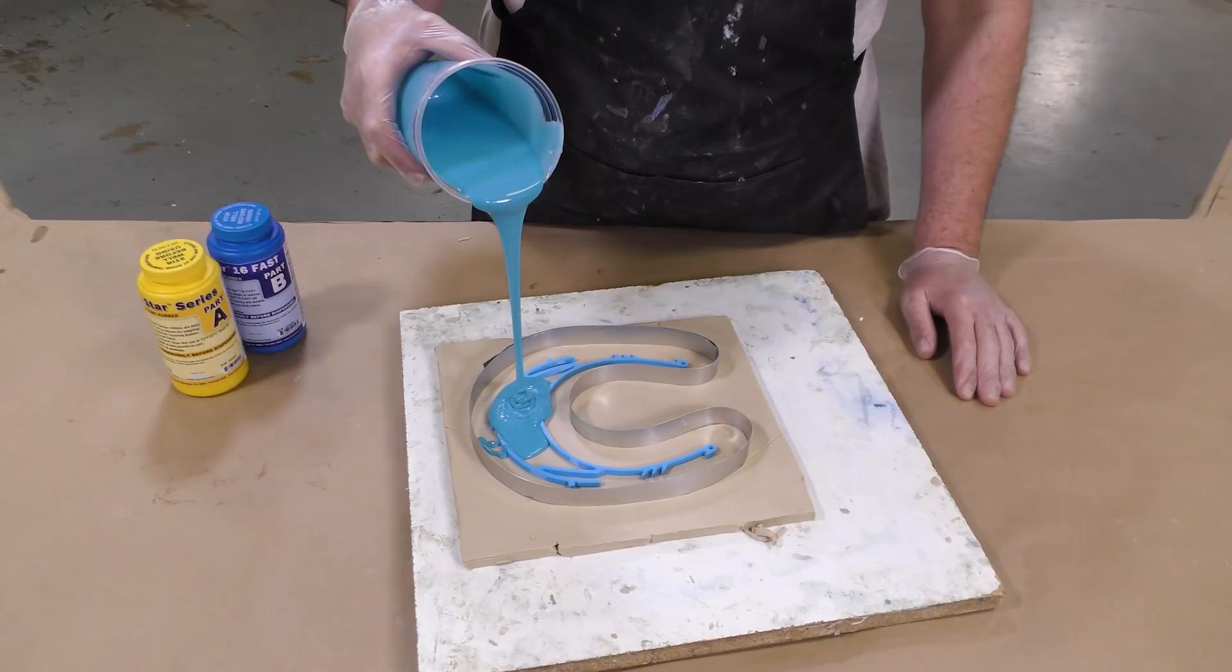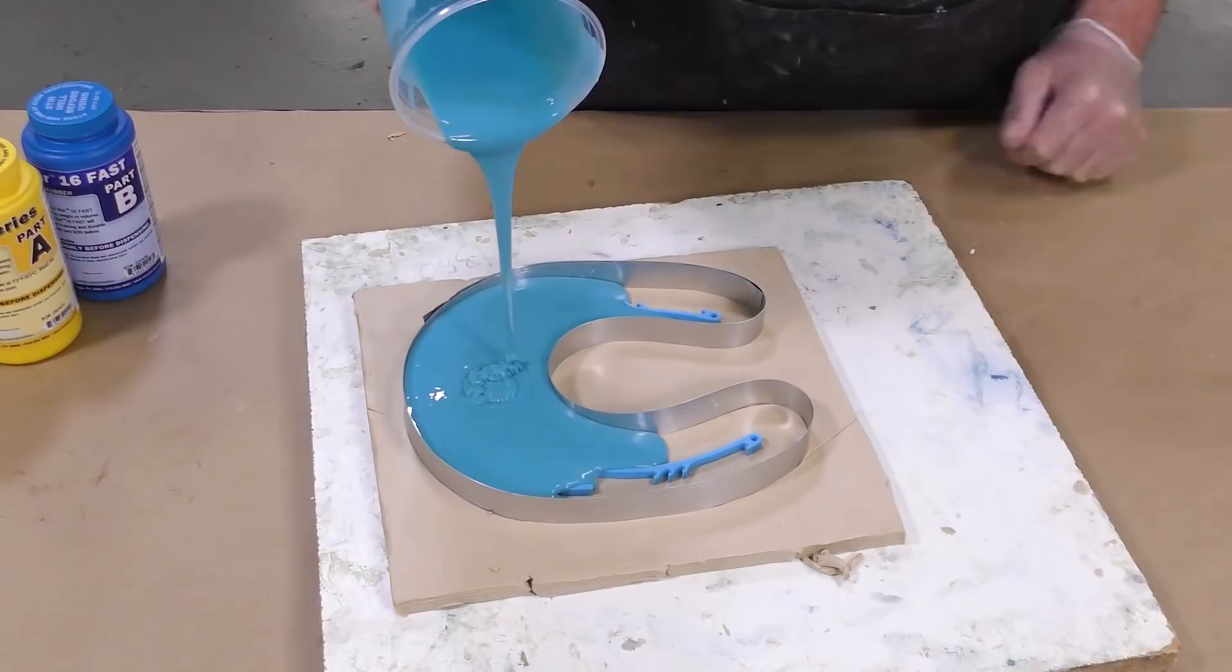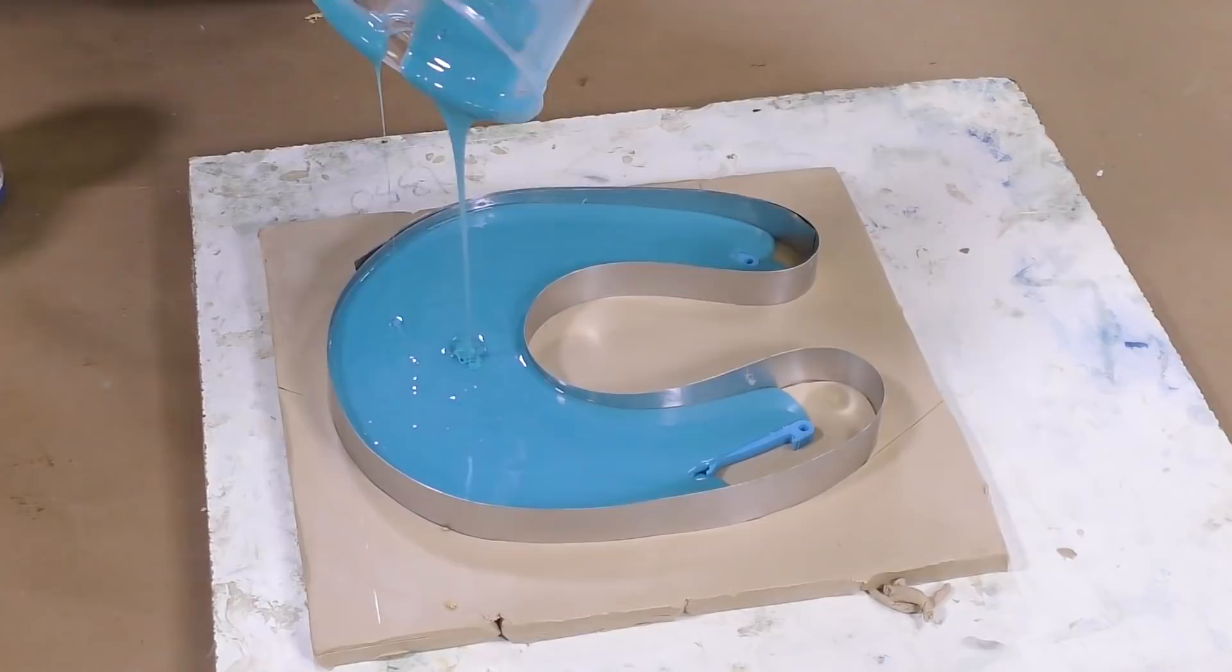Now that the product is ready to pour, we can simply pour into our mold box. This is poured into one single spot and then the material is allowed to find its level. Just pour in one spot and let the material level out. This is now allowed a full cure for 30 minutes.